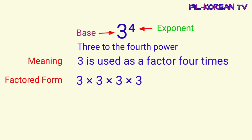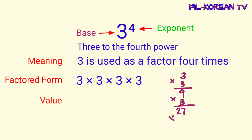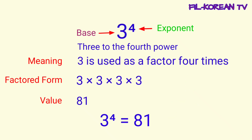Now, to get the value of the exponential notation, we will just multiply the factored form or the expanded form. So, 3 times 3 times 3 times 3 equals 81. So, the value of 3 to the 4th power is 81.